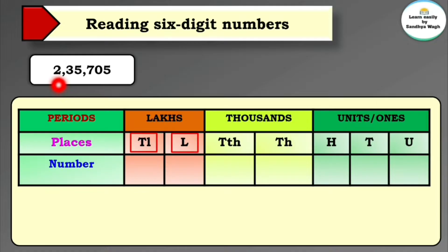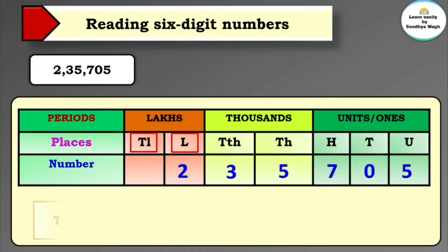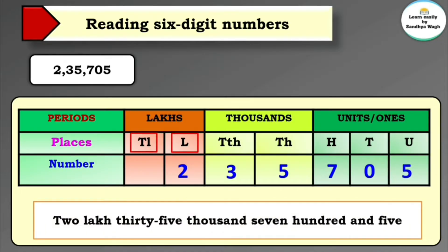Let's write this number according to its places. Two is in the lakhs place, three is in the ten thousands place, five is in the thousands place, seven is in the hundreds place, zero is in the tens place, and five is in the units place. Now read this number: two lakh thirty-five thousand seven hundred and five.